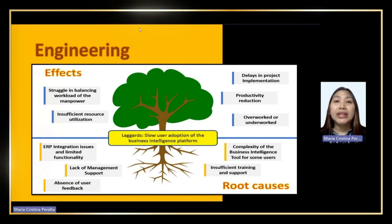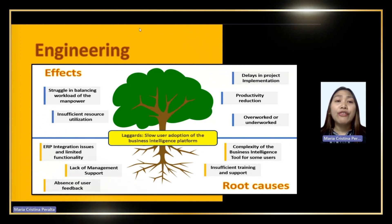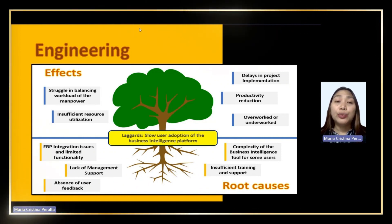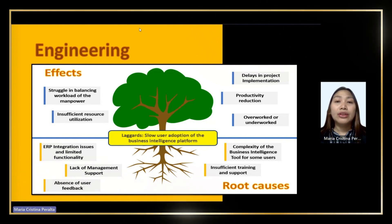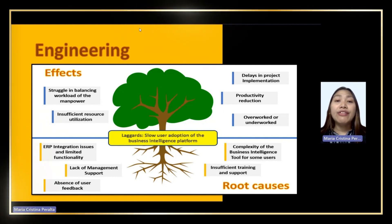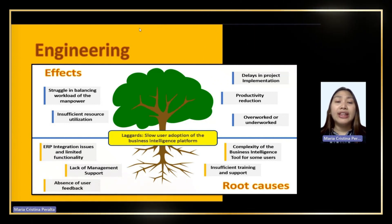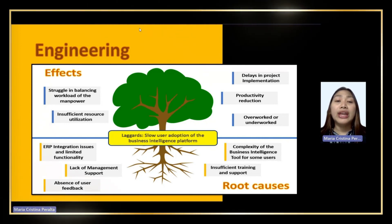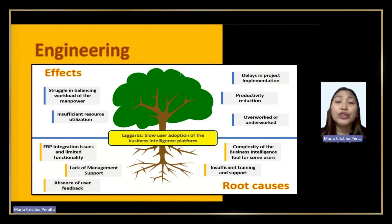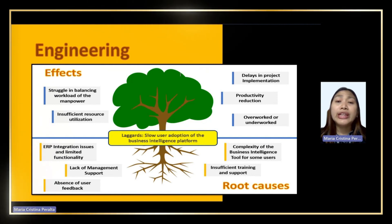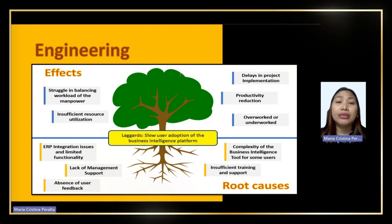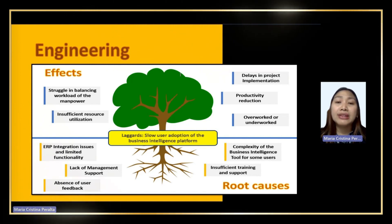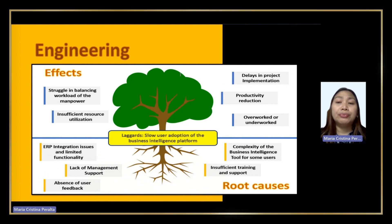For the engineering department, this is the core pillar of the manufacturing organization. Engineers are the key people who configure engineer-to-order products to fit different client requirements and demands. From our problem tree analysis, the negative effects of root causes could have been alleviated if properly implemented for compliance by upper management. Feedback and constructive criticism could have enhanced the usability of the platform, while awareness and training with incentives and recognition could have driven higher engagement and motivated positive reinforcement for embracing transformation.